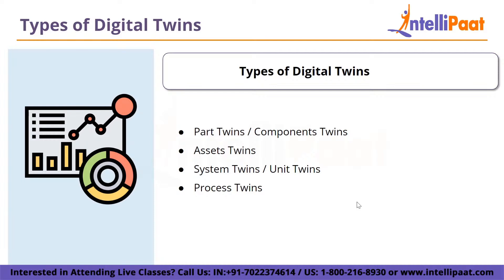Next are asset twins. An asset is formed when two or more components work together to form a unit. Asset twins allow you to investigate the interaction of these components, resulting in a wealth of performance data that can be processed and turned into actionable insights. The next level is system twins, or unit twins, which allow you to see how various assets interact to form a fully functional system, providing visibility into asset interaction and suggesting performance improvements.